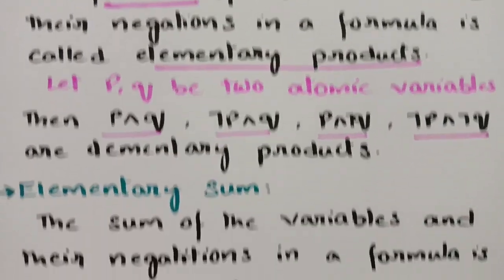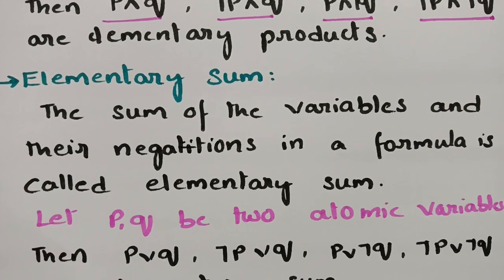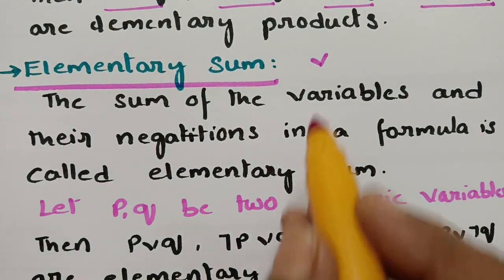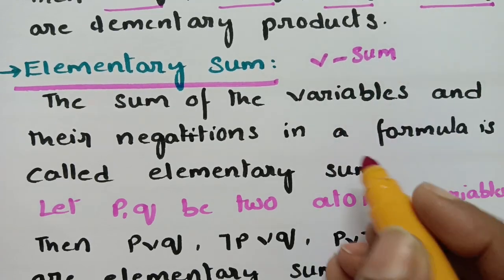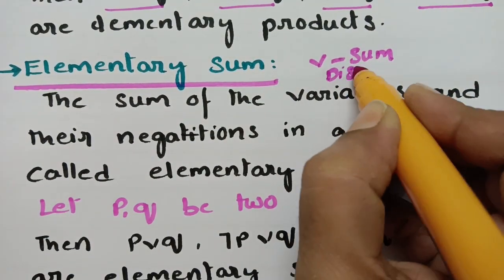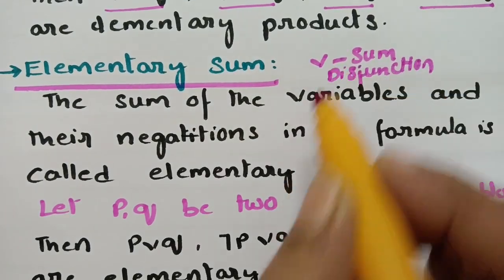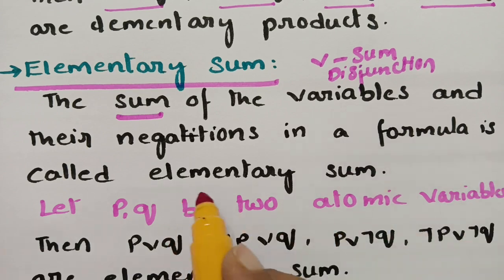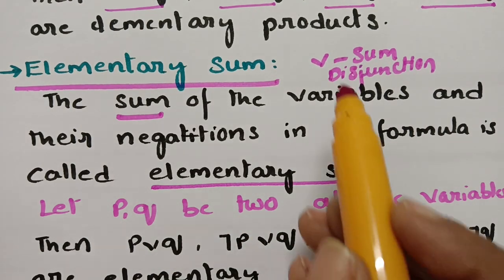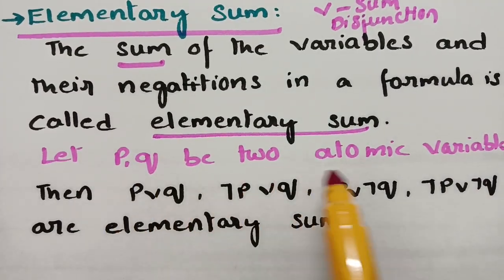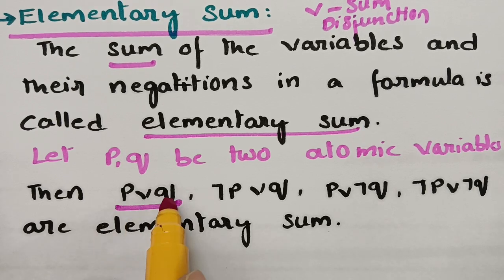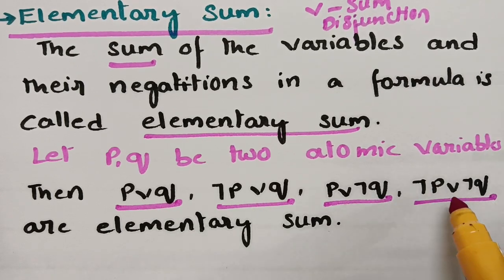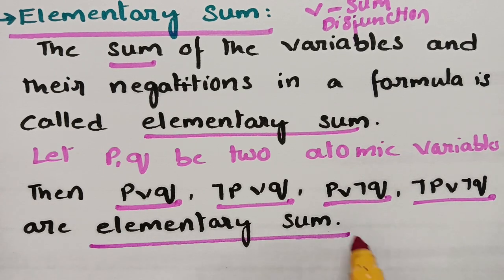Next is the elementary sum. The sum is represented by the cup symbol (∨), otherwise known as disjunction. The sum of variables and their negations in a formula is called an elementary sum. If p and q are two atomic variables, then p∨q, ¬p∨q, p∨¬q, and ¬p∨¬q are all elementary sums.